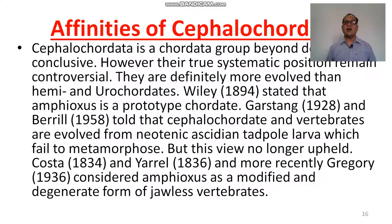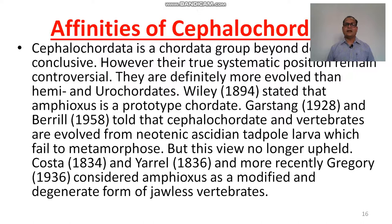Affinities of Cephalochordata. Cephalochordata is a group beyond the conclusive, and its true systematic position is controversial. They are definitely more evolved than Hemichordata and Urochordata. Willi stated that Amphioxus is a prototype chordate. Garstang and Beryl called them Cephalochordates, and argued that vertebrates evolved from a common neotenic ascidian tadpole ancestor — but this view is no longer upheld.